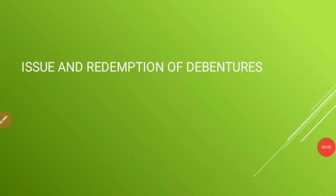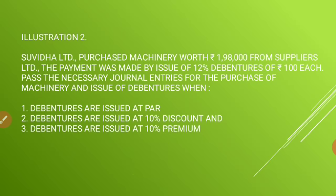Good morning dear students. Hope you people are clear with yesterday's illustration. Let us go with the next illustration. Subita Limited purchased machinery worth rupees 1,98,000 from Suppliers Limited. The payment was made by issue of 12% debentures of rupees 100 each. Pass the necessary journal entries for the purchase of machinery and issue of debentures when debentures are issued at par, at 10% discount, and at 10% premium.